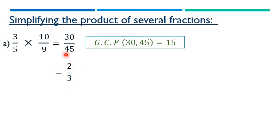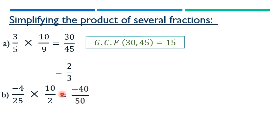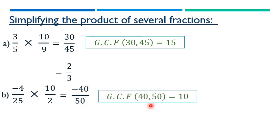Another example of the first method: minus 4 over 25 times 10 over 2. Multiply numerators and denominators: minus 40 over 50. The greatest common factor of 40 and 50 is 10, so we divide by 10 to get minus 4 over 5.